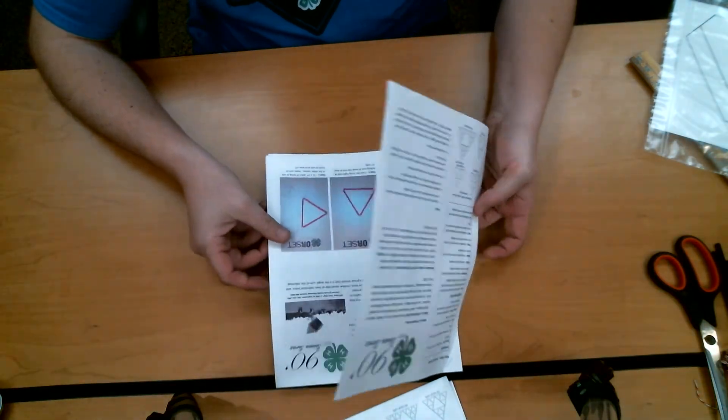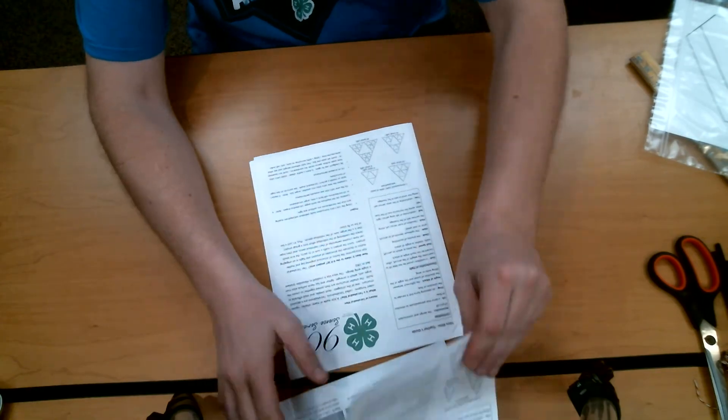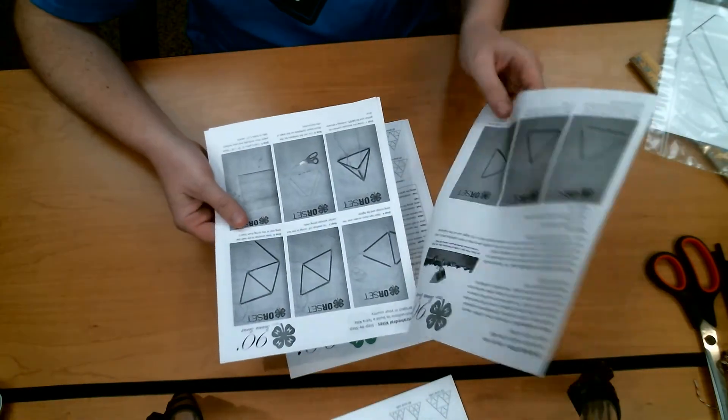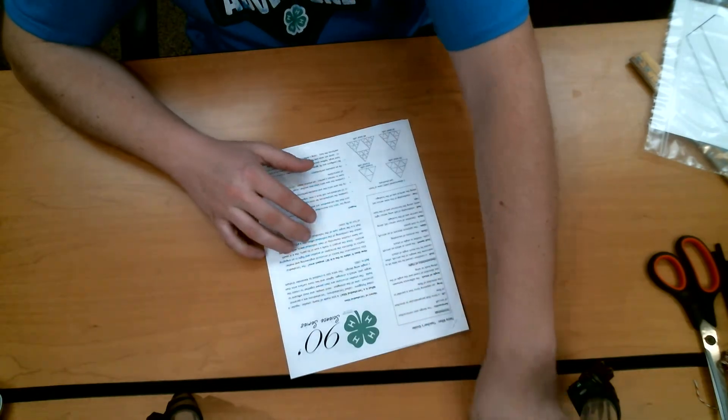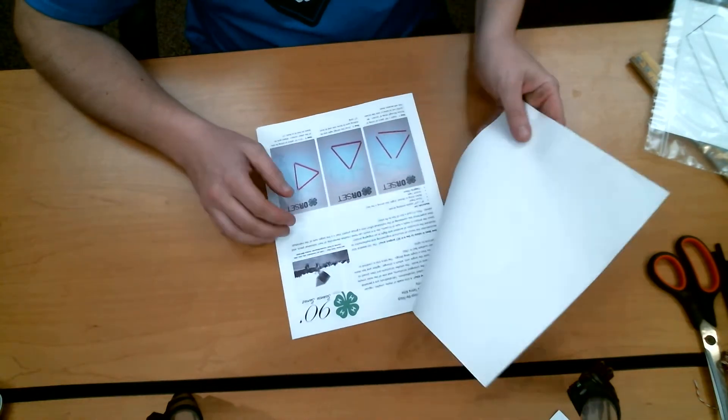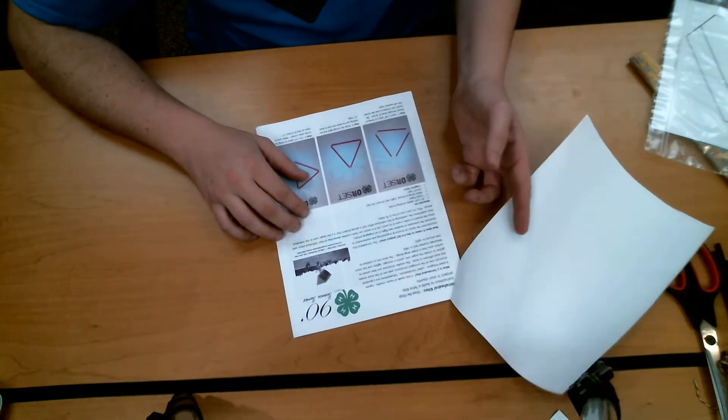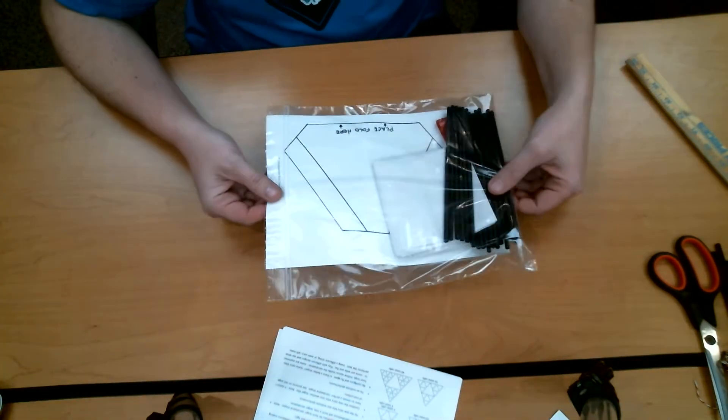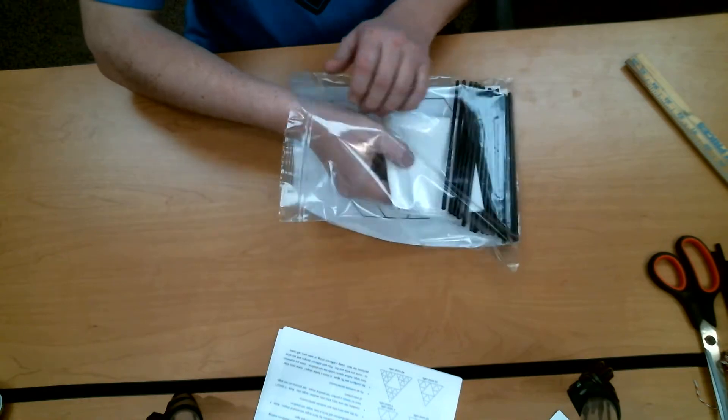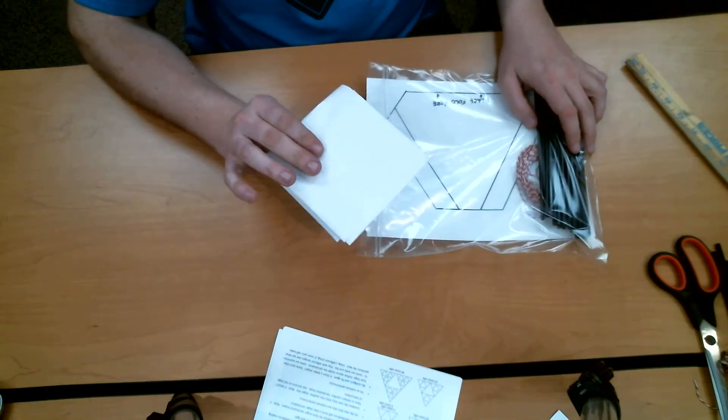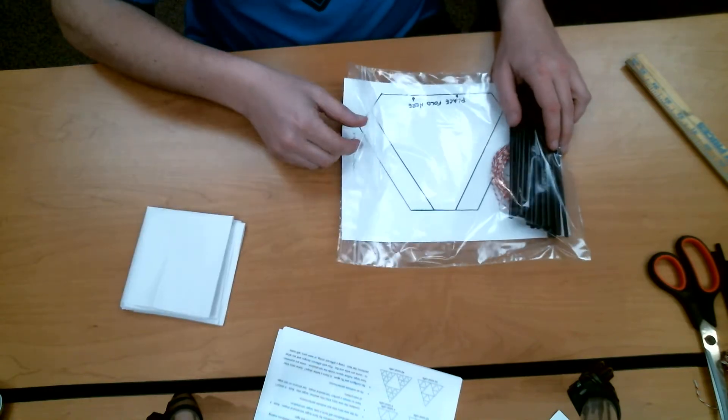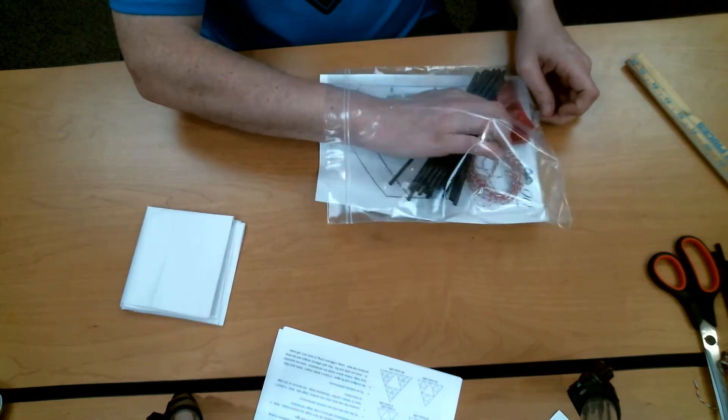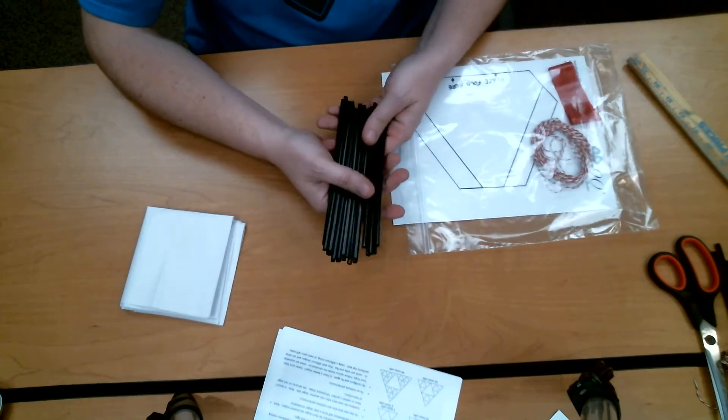Everybody will be getting a set of these instructions. Yours will be double-sided black and white. I'm going to be using the single-sided for the demonstration just because it's easier for me to flip. Everybody will also be getting their own Ziploc bag. Inside the bag, you're going to have two sheets of tissue paper folded up. You're going to have 24 black plastic drinking straws.